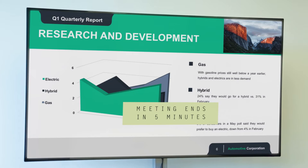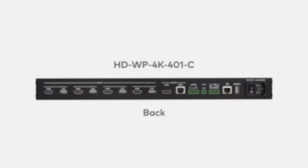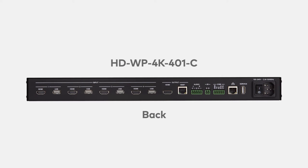The custom text field can be positioned at any location to display a static label or dynamic pop-up message from the control system. For branding purposes, you can place a company logo at any location on the screen.